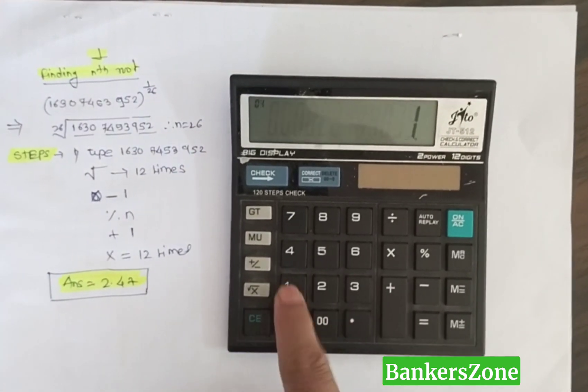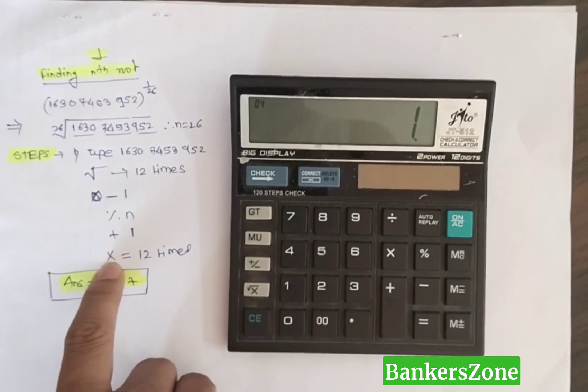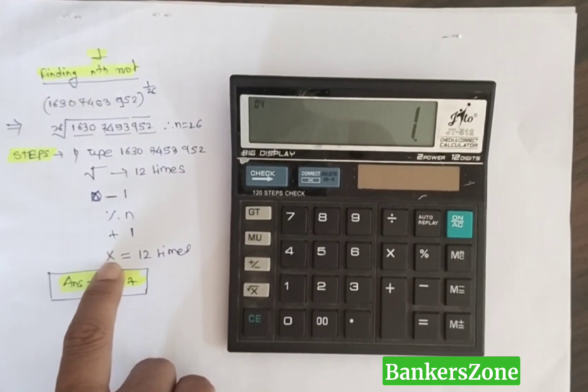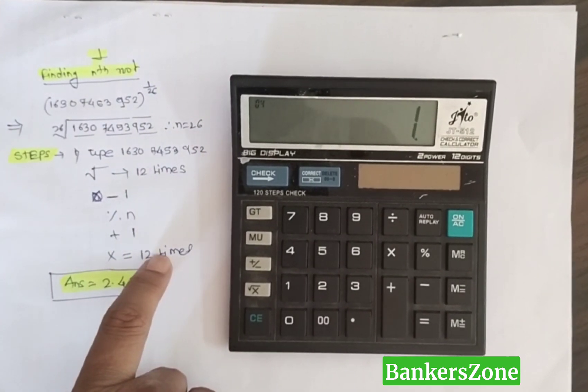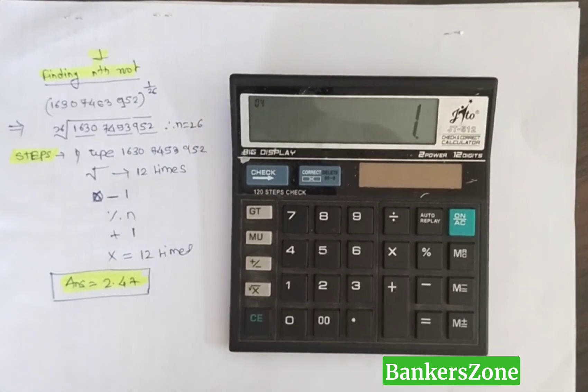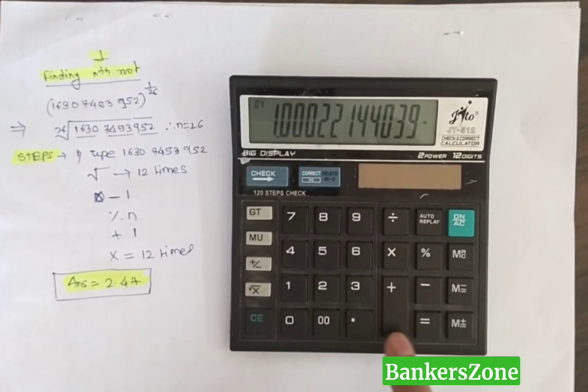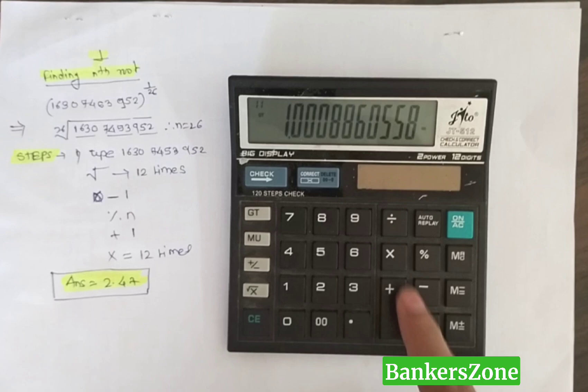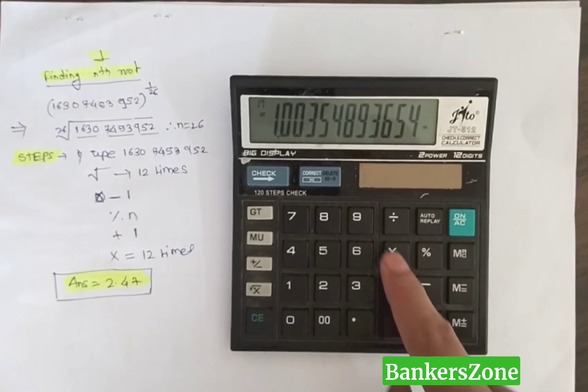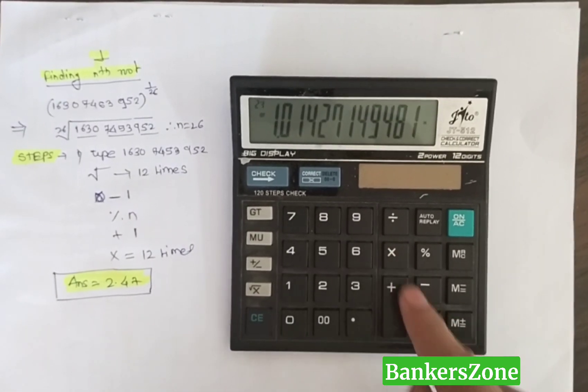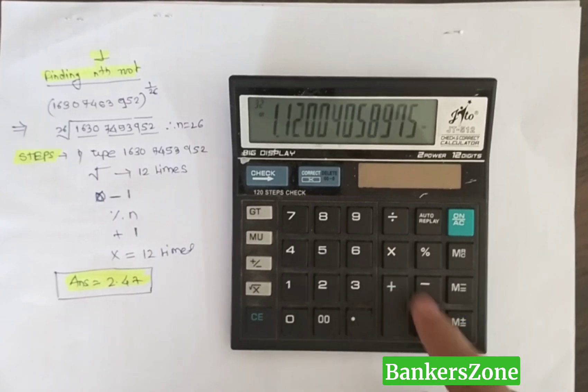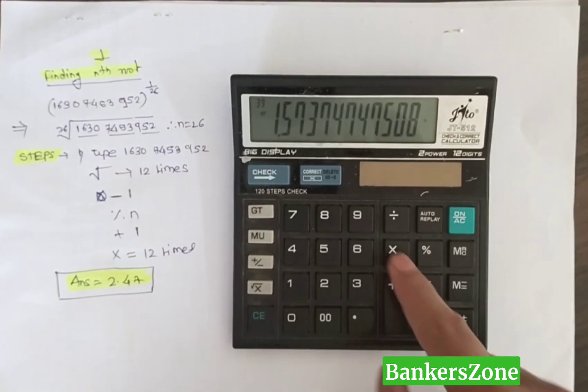Next, you have to press equal, multiply, and equal - this pair 12 times. I am pressing multiply equal: 1, 2, 3, 4, 5, 6, 7, 8, 9, 10, 11, 12.